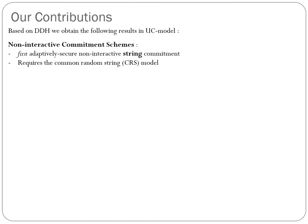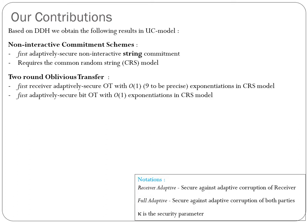We obtain the first adaptively secure non-interactive string commitment. Previous non-interactive commitment schemes were bit commitments and required a common reference string, whereas our scheme works in the common random string model, which we denote as CRS. Secondly, we obtain multiple results in the oblivious transfer literature in the CRS model and in the random oracle model. We consider an OT protocol where the receiver can get adaptively corrupted and the sender can be statically corrupted — such an OT protocol is called receiver adaptively secure OT. We obtain the first receiver adaptively secure OT which uses constant exponentiations — specifically only 9 exponentiations — which is better than state-of-the-art static OT protocols that require 11 exponentiations in the CRS model.